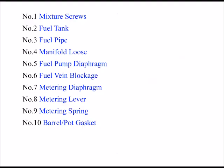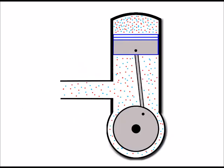Okay, now we've dealt with any potential issues with the spring, we can move on now to the barrel gasket or the pot gasket as it's well known, and that's my number 10. To best explain this, I just want to show this very basic drawing here of a two-stroke engine.